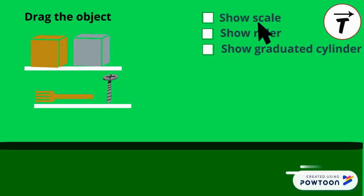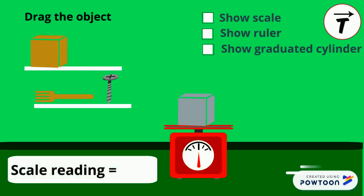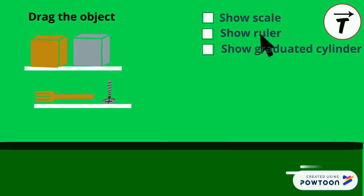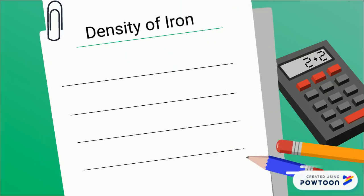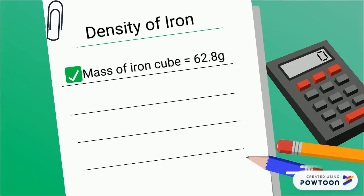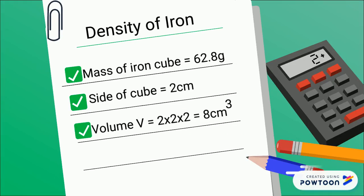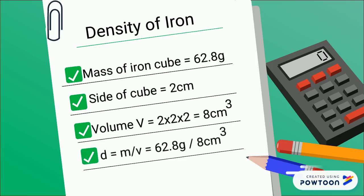Repeat the same steps to measure the density of the iron cube. Its mass is 62.8 grams and the size of the iron cube is also 2 centimeters. With a mass of 62.8 grams and a volume of 8 centimeters cubed, the density of the iron cube is determined by D equals m over v, giving 7.85 grams per centimeter cubed.